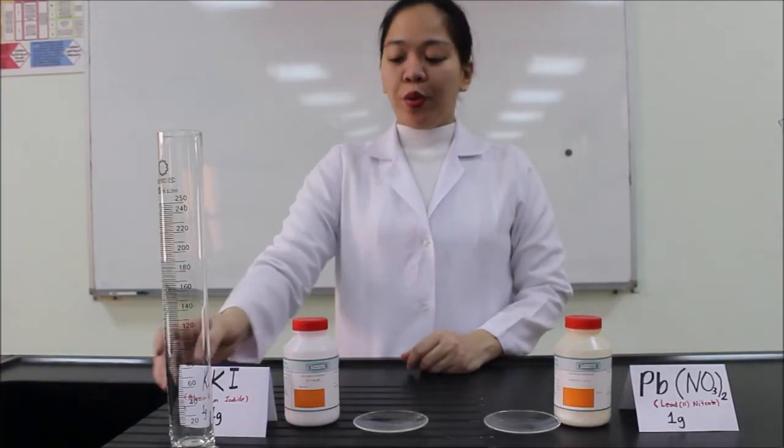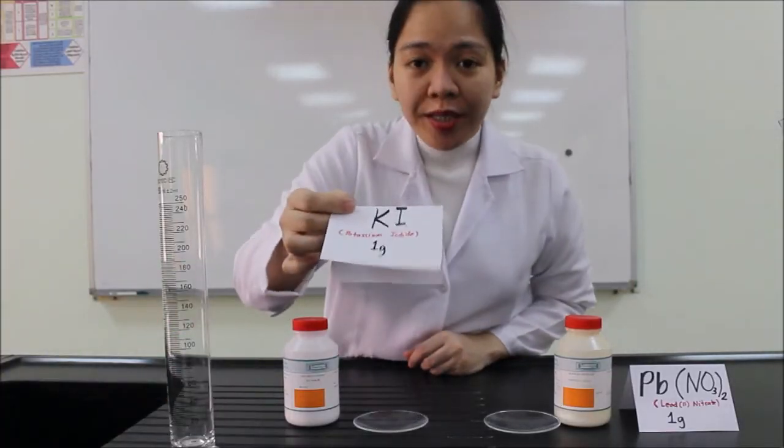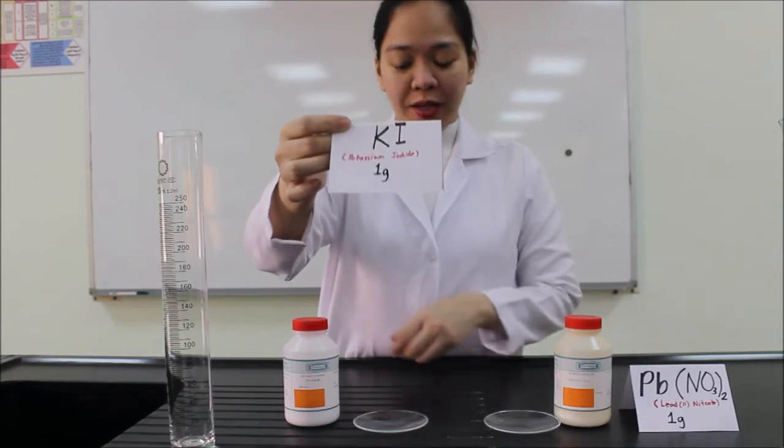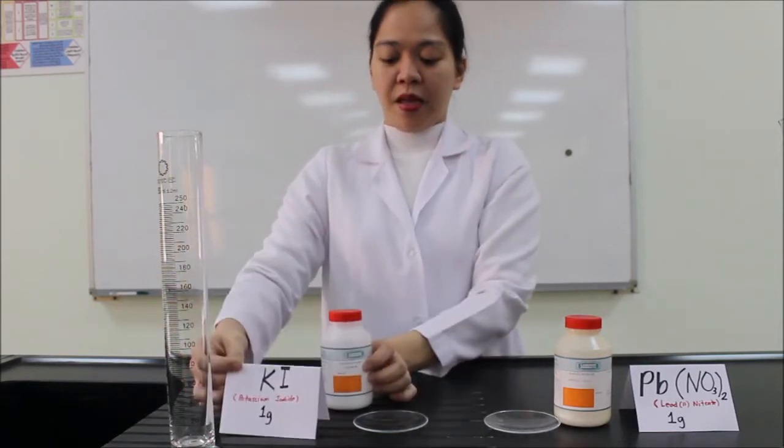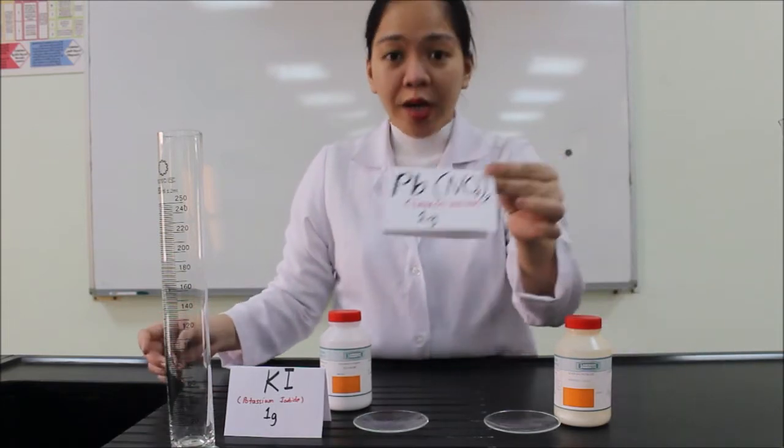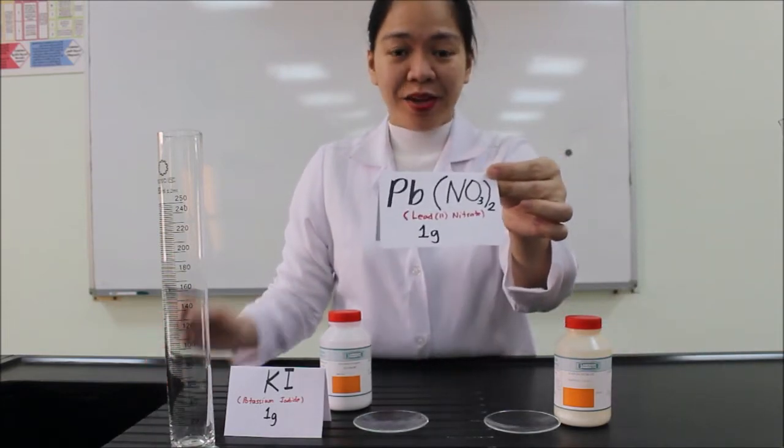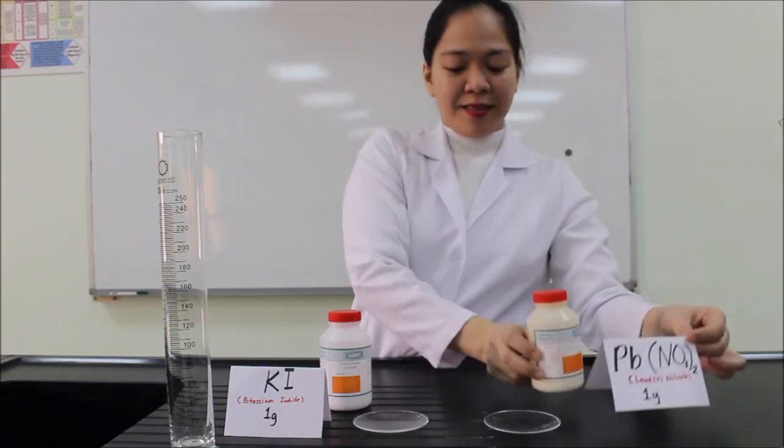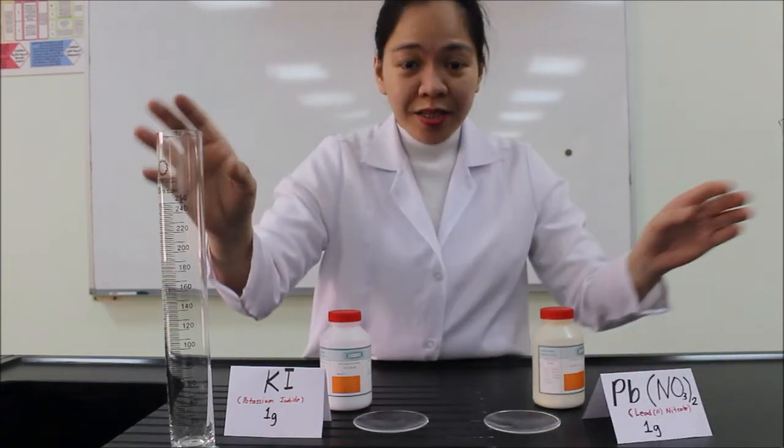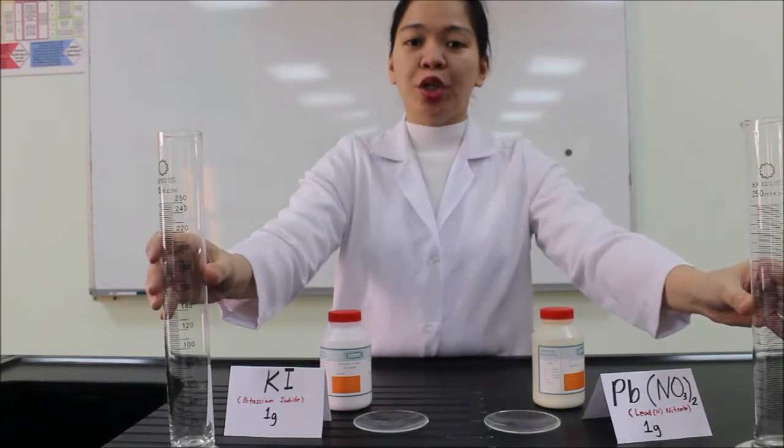Today I will show you the golden rain experiment. In this experiment, we will need 1 gram of potassium iodide, 1 gram of lead nitrate, and 175 ml water at room temperature.